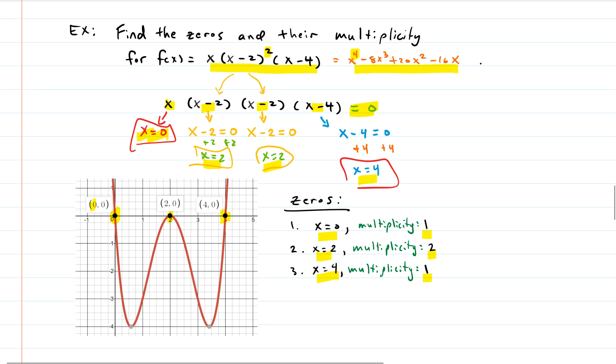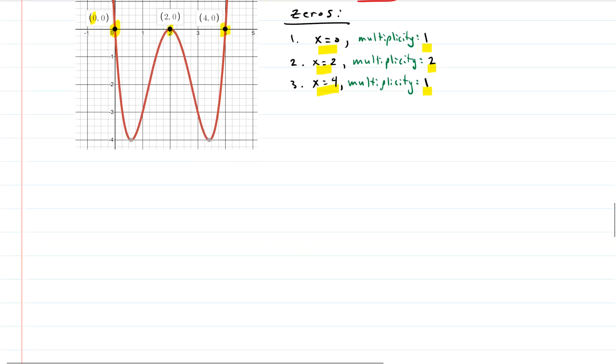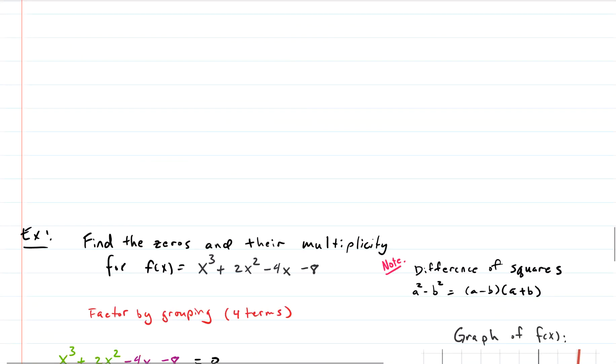So this is actually, once you do it once, it's kind of like, yeah, okay, I can do this. Even multiplicities touch and turn around, regardless of where they come from the bottom or whether they come from the top of the graph. And the odd multiplicities cross. And the higher the multiplicity, the flatter it is.